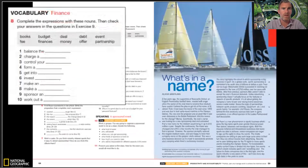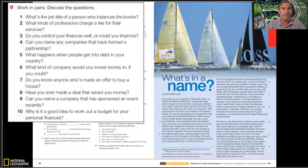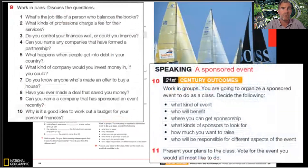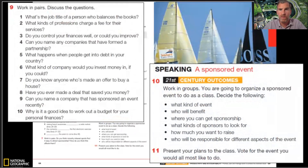In this case, there's a little bit of work with financial vocabulary. Students work in pairs, discuss questions using that vocabulary, and then that leads on to the final speaking task with the 21st century outcome. Here's a good example: working in groups, students organize a sponsored event for the class and decide the details. It's a really good collaborative activity with critical thinking and creative thinking involved — all of those 21st century skills coming through this kind of mini project.